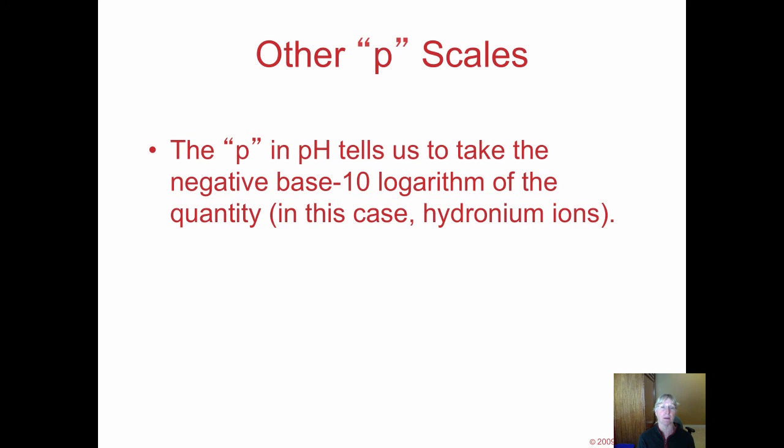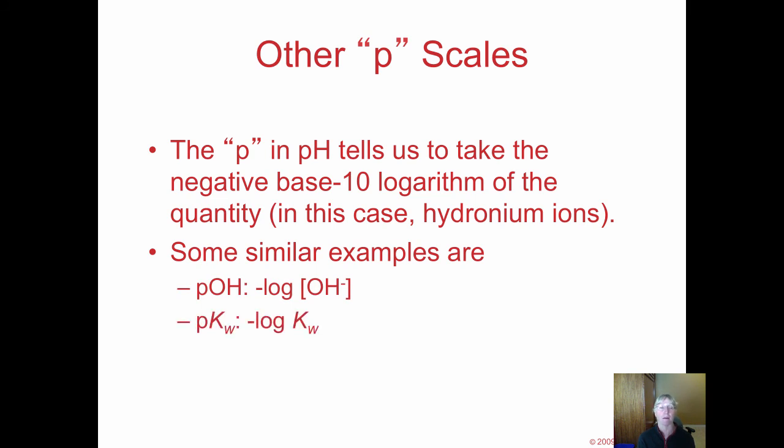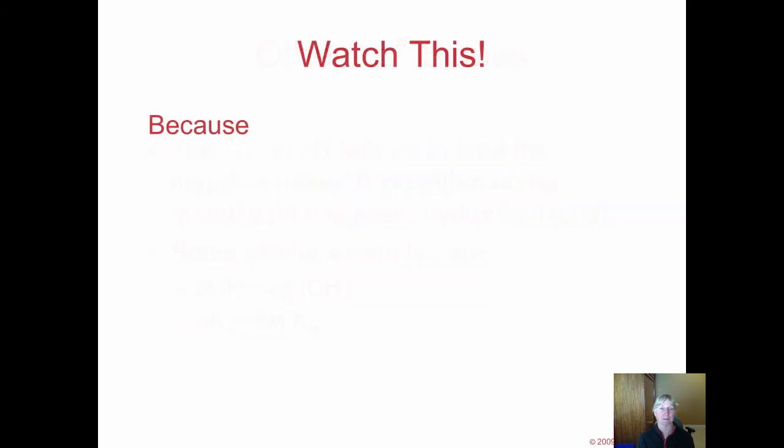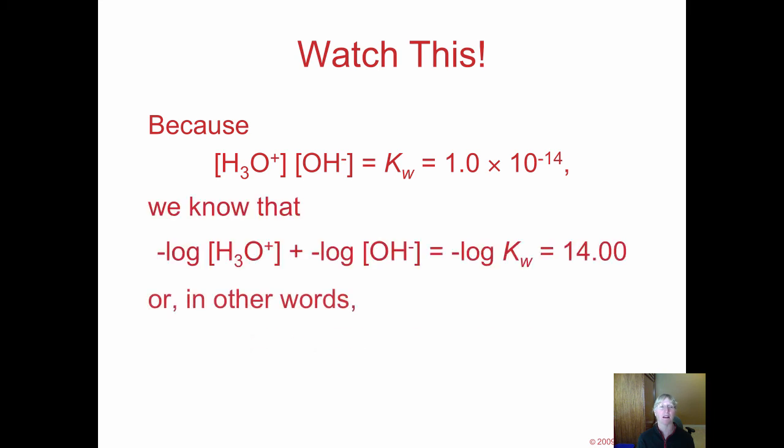There's other pH scales, like the pOH scale, and that would be an example of if you take the negative log of the hydroxide ion. You can also have, and we'll do this later on in another chapter, you can take the negative log of the Kw, the ionization constant for water, ion product constant, and if hydronium times hydroxide equals this ion product constant for water, then the log of hydronium, negative log of hydronium plus a negative log of hydroxide should equal the negative log of the ion product constant. Or a cool way to say that is pH plus pOH equals 14, which we just saw on a previous slide.